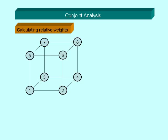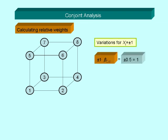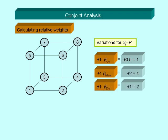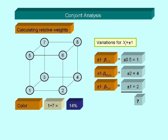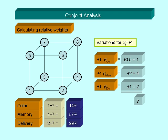To calculate the relative preference for each individual attribute, we have to look at the total range of variations for our level x equals minus one and plus one, which is seven in our example. So for the attribute color, we get a relative preference of 1 over 7 or 14 percent, for memory 4 over 7 or 57 percent, and for delivery 2 over 7 or 29 percent.